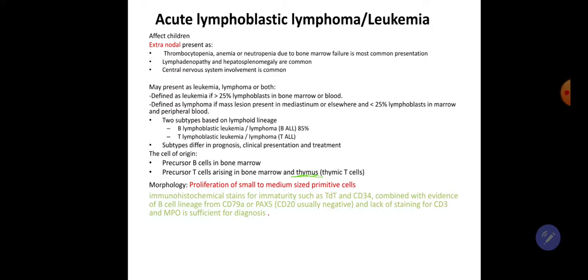Acute lymphoblastic lymphoma/leukemia affects children. It is extranodal and presents with thrombocytopenia, anemia, and neutropenia due to bone marrow failure as the most common presentation. Lymphadenopathy and hepatosplenomegaly are common, and central nervous system involvement is common. It may present as leukemia, lymphoma, or both. It is defined as leukemia if more than 25% of lymphoblasts are present in the bone marrow or blood, and as lymphoma if a mass lesion is present in the mediastinum or elsewhere with less than 25% lymphoblasts in the bone marrow and peripheral blood.